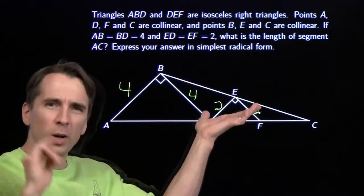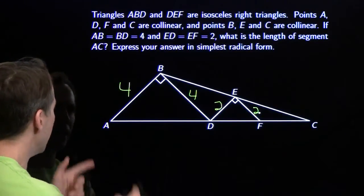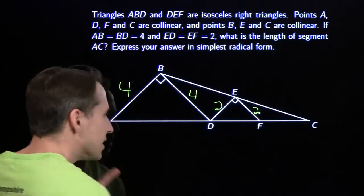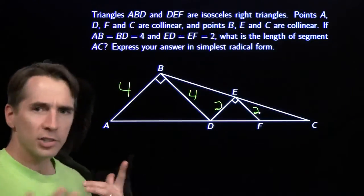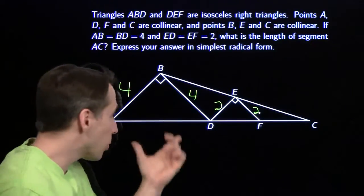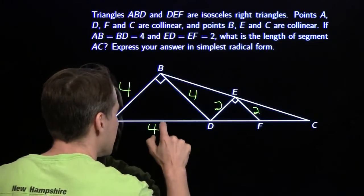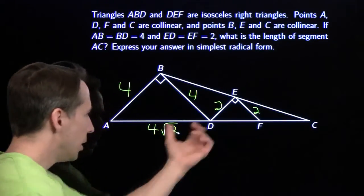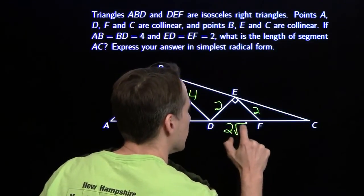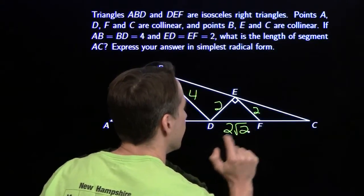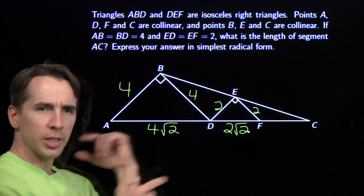By putting these right on the diagram, I can see I can determine a few other side lengths already. AD is the hypotenuse of this isosceles right triangle, so its length is the square root of 2 times the length of one of its legs. That makes AD equal to 4 root 2. And in the same way, DF is 2 times the square root of 2.